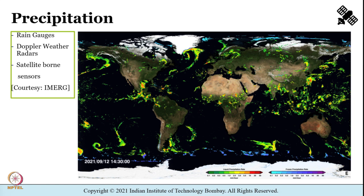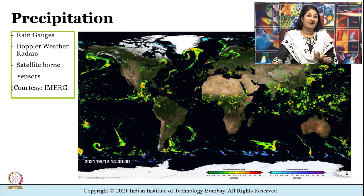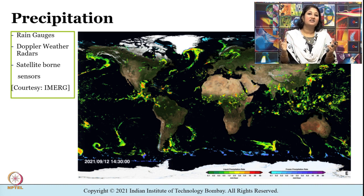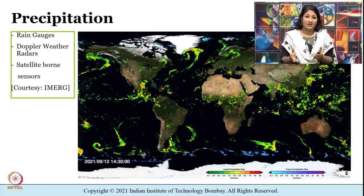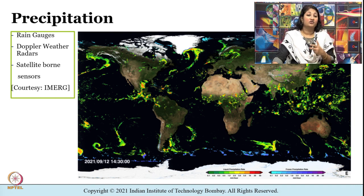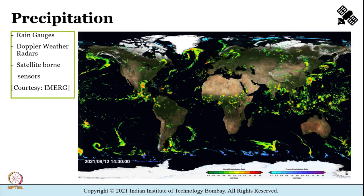To get gridded precipitation data we could either grid the rain gauge data, grid data from weather radars or satellite sensors, or use multi-satellite precipitation products that are available at every three-hourly interval. Not all the precipitation that falls reaches the ground — some may evaporate back into the atmosphere, some may get intercepted by the canopy of plants. Hydrological models usually deal with these in different ways, such as making intercepted rain part of the modeled evapotranspiration process.